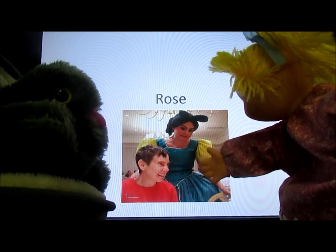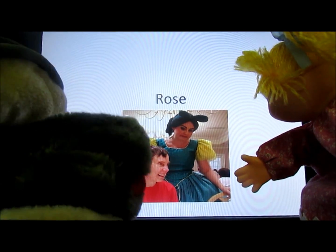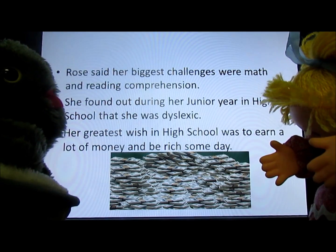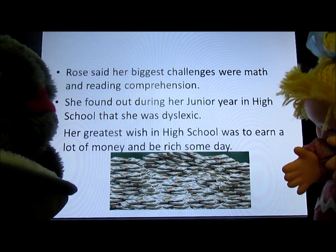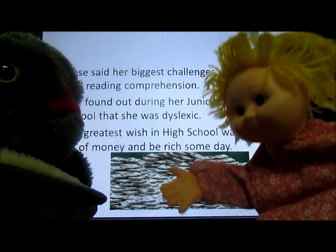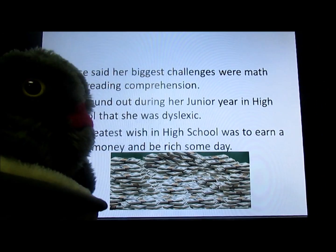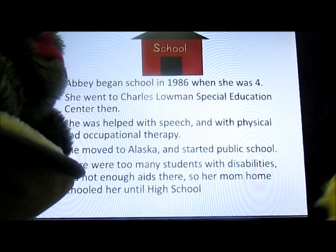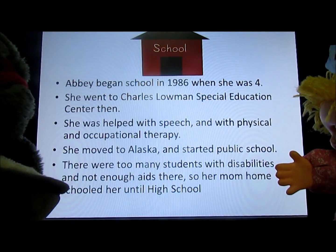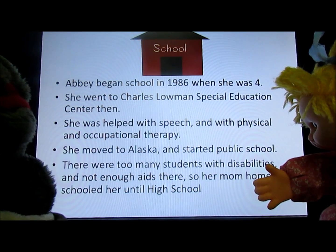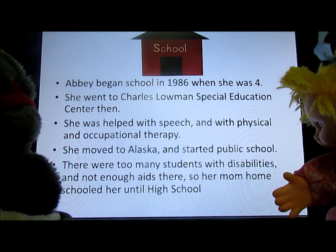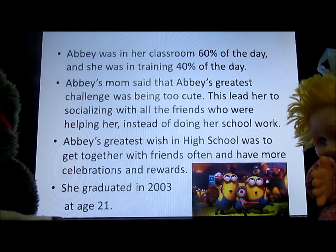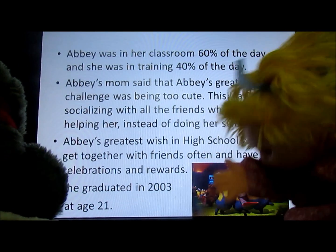Who's that? It says Rose. Rose has an intellectual disability. The thing she wanted most when she was in high school was to earn a lot of money and to be rich someday. I want to earn a lot of money and be rich someday too! Who's that? That's Abby. Abby is a girl with Down syndrome. Abby began school when she was four years old. There were too many students with disabilities and not enough aides, so her mom had to take her out of that school — she was not in inclusion anymore. Her greatest wish was to get together and hang out with friends a lot.